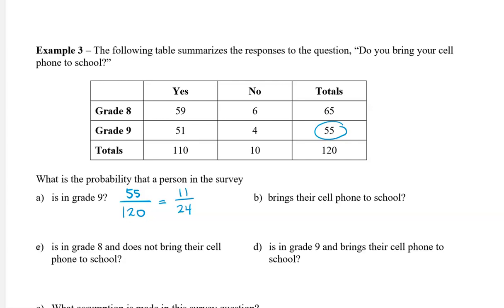Using the same chart, what is the probability that a person in the survey brings their cell phone to school? The number of people who bring their cell phone to school, we can look at the total. There are 110 of them. So that would be 110 out of a total of 120. We can divide the numerator and the denominator by 10, and we get 11 out of 12.